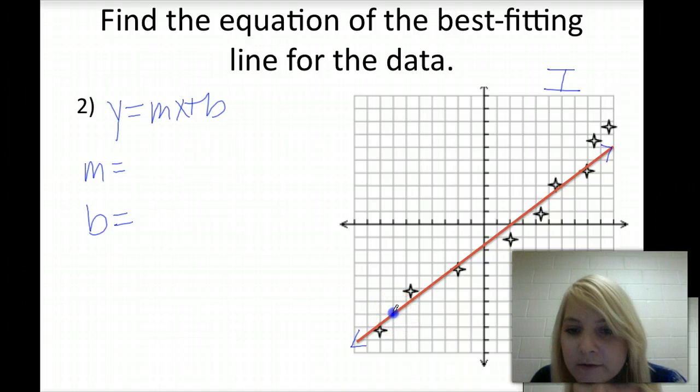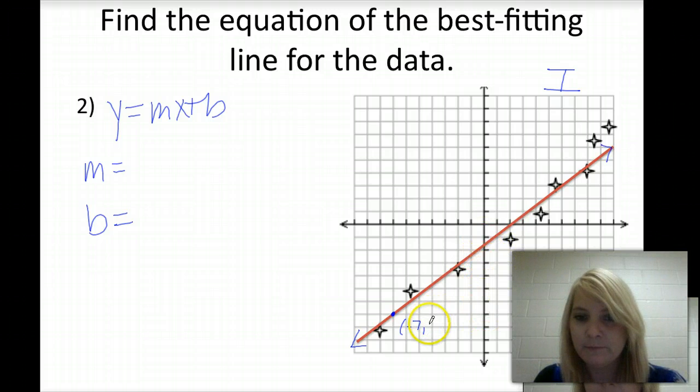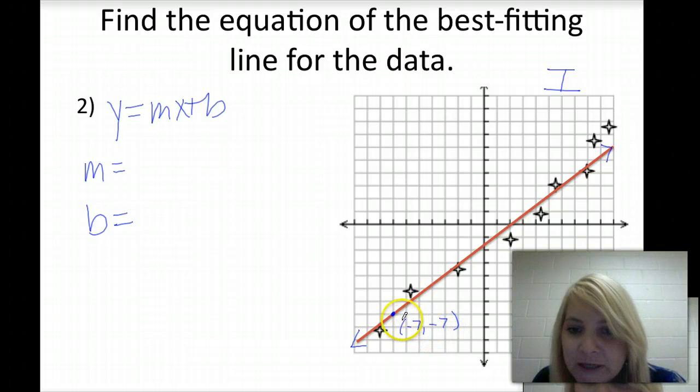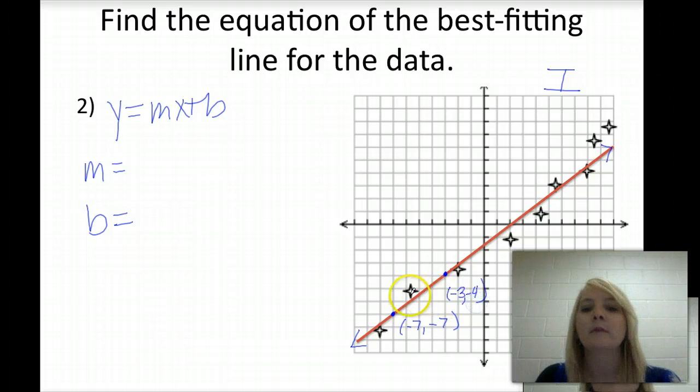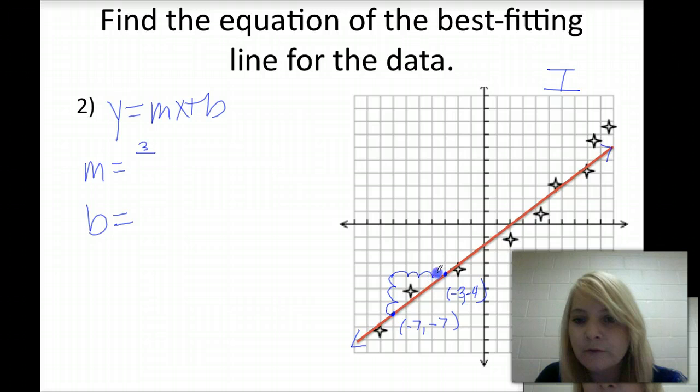So we have a point right here, which is negative 7, negative 7. And then taking a look, we also pass the grid at this point here. So that's negative 3, negative 4. So our rise is 1, 2, 3, and then we run to the right 1, 2, 3, 4 units. So our slope is 3 over 4.